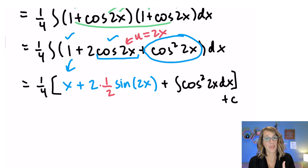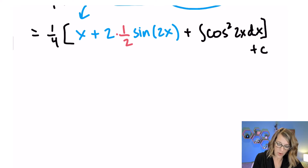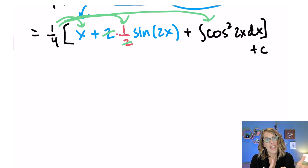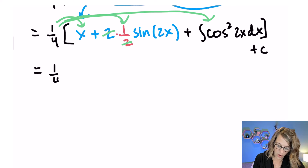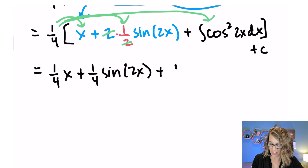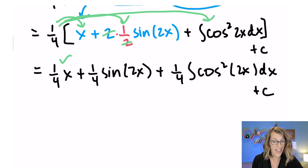There's a plus c on all of this. Bringing the 1/4 back through — distributing it across the three terms — the two factors of 2 in the sin2x term cancel. So part of my answer is: (1/4)x + (1/4)sin(2x), plus the remaining integral of cos²(2x) dx. The first two terms are done.